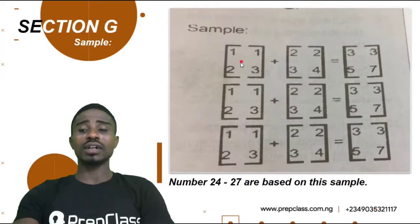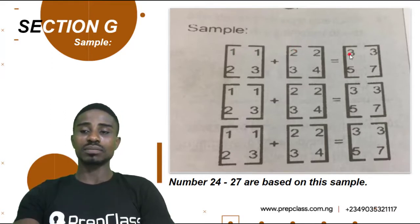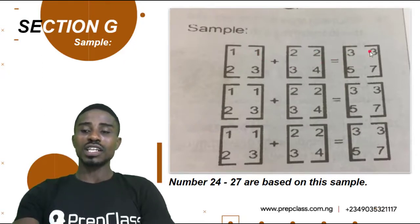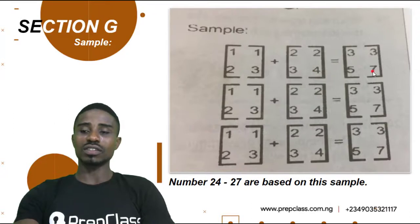We are going to be using a trial and error method to establish our answer. I would assume that 1 plus 2 gave us 3 here — that looks correct. Yes, 1 plus 2 gave us 3. So I can also say 1 plus this 2 gave us 3, that's why we have 3 3 in this bracket. I can also say 2 plus 3 gave us 5 and 3 plus 4 gave us 7. So I think this is true.